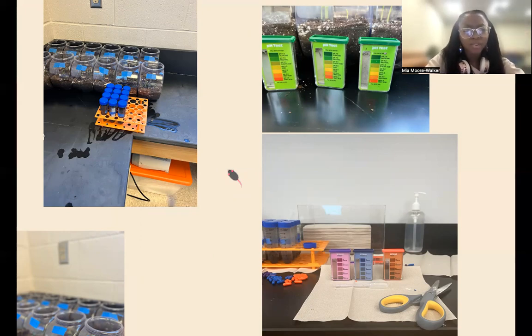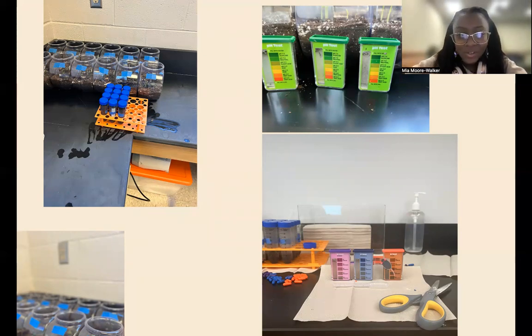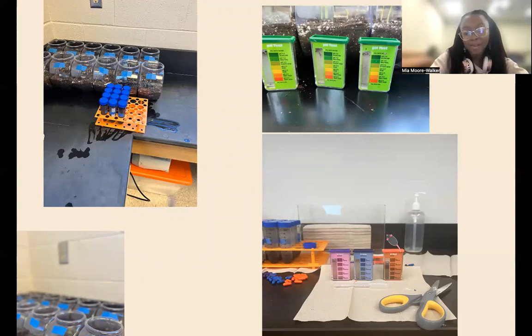The peas were watered every two to three days and received flora and fauna once a week. Every seven days I measured the concentration of nitrogen, potassium, and phosphorus, and then I measured the pH. This was done using the, you can kind of see it over here, Luster Leaf Rapid Soil Test Kit.